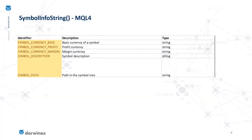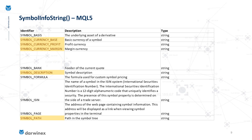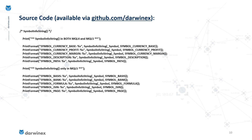For SymbolInfoString, property identification is through an enumeration called ENUM_SYMBOL_INFO_STRING. The properties supported in MQL4 include symbol currency base, profit, margin description, and symbol path. For MQL5, all MQL4 properties are supported plus additional ones — including symbol basis, bank formula, the international securities identification number, the page, and the webpage containing symbol information. We've written sample code that extracts these values and prints them to the experts tab, available in the MQL4 to MQL5 tutorials repository at github.com/DarwinX.